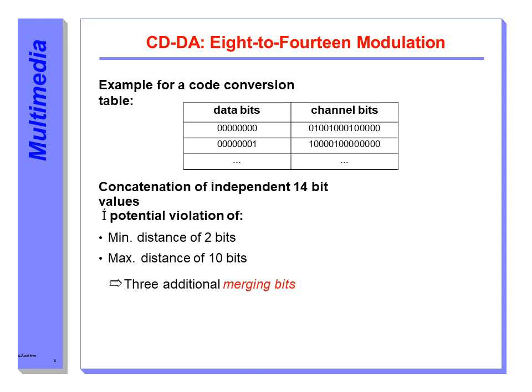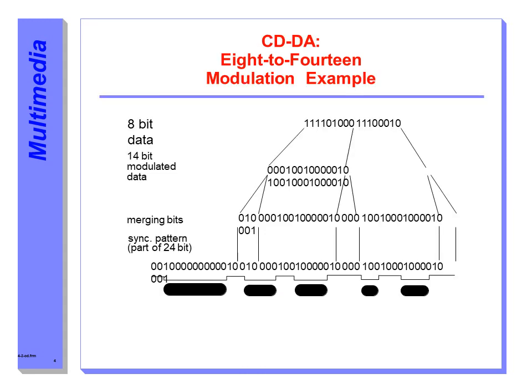Three additional merging bits are inserted between successive modulated symbols to ensure that the required regularity is met. This ensures the minimum distance is only 2 bits and the maximum distance is only 10 bits. A simple example shows how the 8-bit data format is converted to 14-bit modulated data, and you can see the merging bits inserted by external zeros and ones.